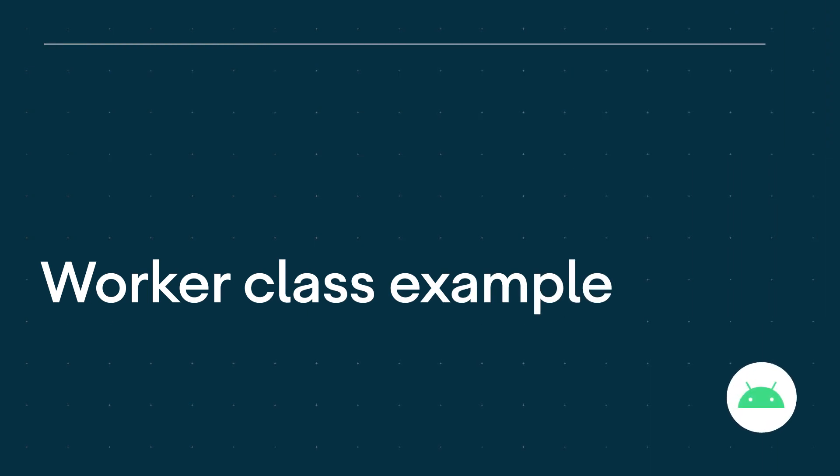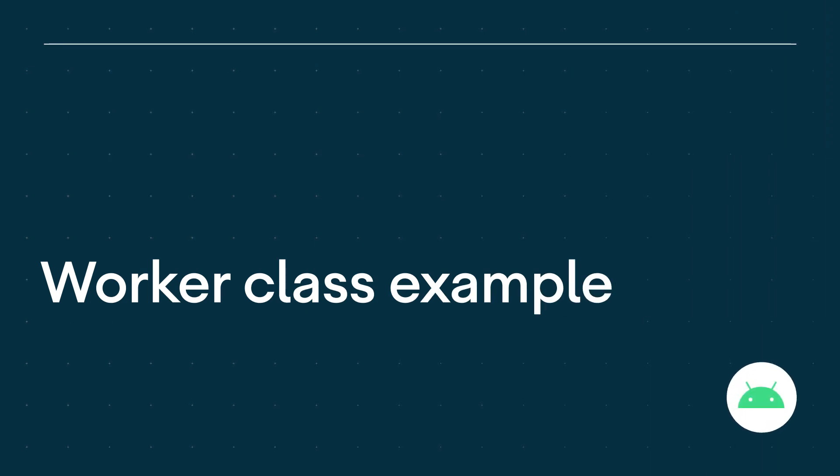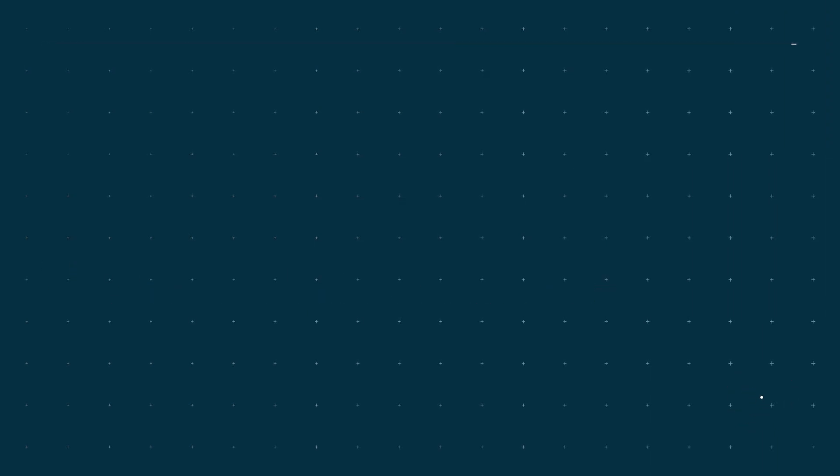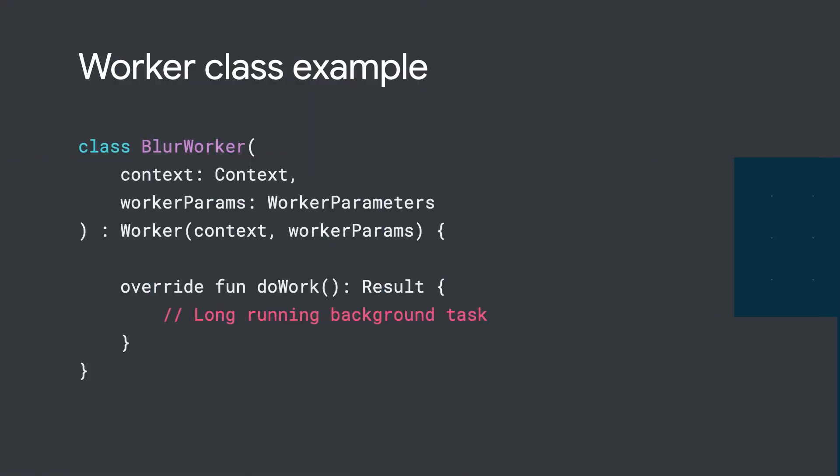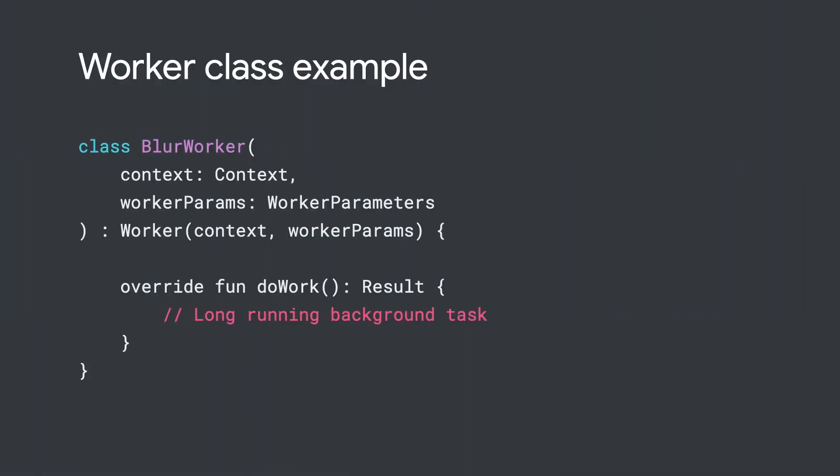Let's begin with the Worker class. Your Worker implementations need to extend the Worker class and override its doWork method to define what your task does. WorkManager uses this function to execute your task asynchronously in the background thread.